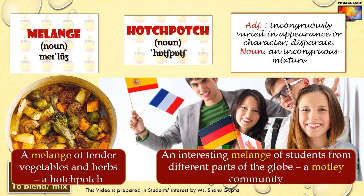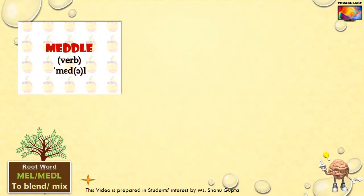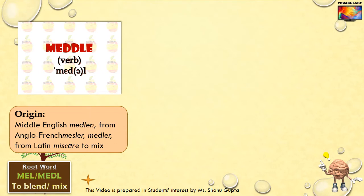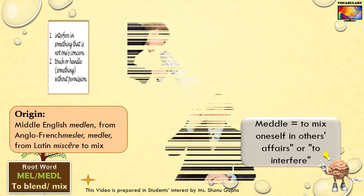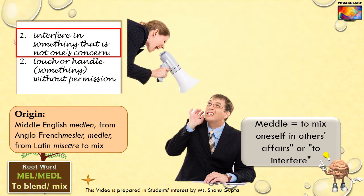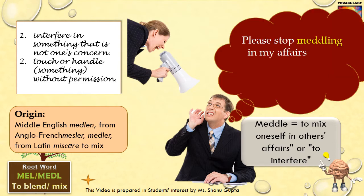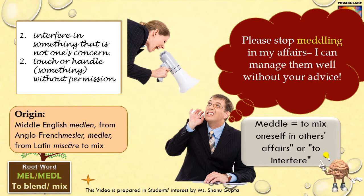Back to our root word meddle, which means to mix. Meddle is another important word derived from this root. To meddle is literally to mix oneself in others' affairs or to interfere. According to the Oxford dictionary, to meddle means to interfere in something that is not one's concern. You would probably want to say: Please stop meddling in my affairs. I can manage them well without your advice.